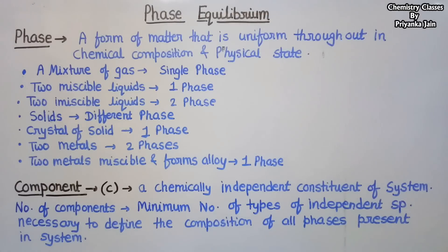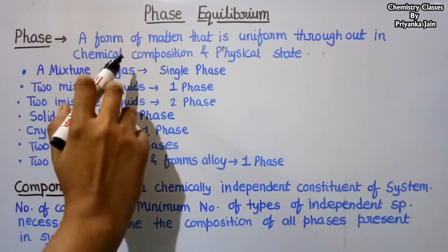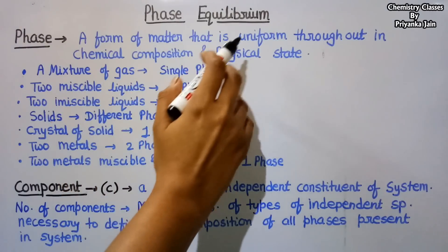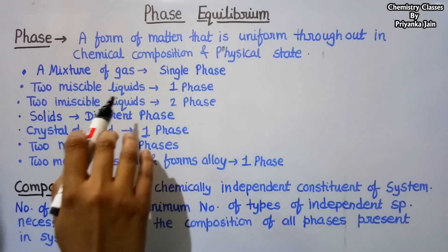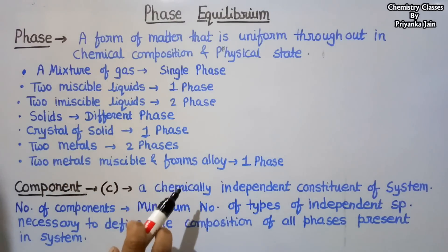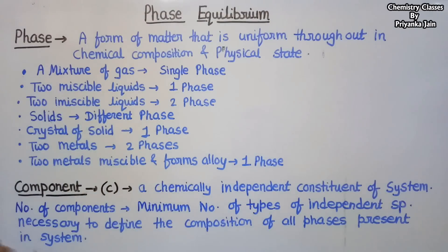Before understanding the phase rule, we should have knowledge about phases, components, and the degree of freedom. So firstly, what is a phase? A phase is a form of matter that is uniform throughout in chemical composition and physical state. When a matter has the same chemical composition and same physical state throughout the whole system, then it is called a single phase.